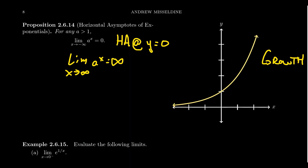If you have a decay model — an exponential function whose base is less than one — you actually see the opposite behavior. On the left-hand side it goes off towards positive infinity; on the right-hand side it goes towards zero from above. But a decay model is just a reflection of a growth model across the y-axis, so if you know the growth model, you'll know the decay model as well.